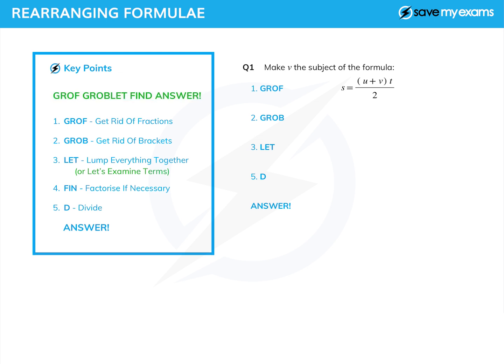So what does it all mean? If you can remember 'Groff Groblet Find Answer', you'll be able to remember that Groff means get rid of fractions, Grob means get rid of brackets, L — I call it lump everything together, although your maths teacher might want to call it let's examine terms. Fin means factorise if necessary — not a lot of examples need that, but we will get there. And D means divide. By the time you've done all of that, Groff Groblet Find, you should have the answer.